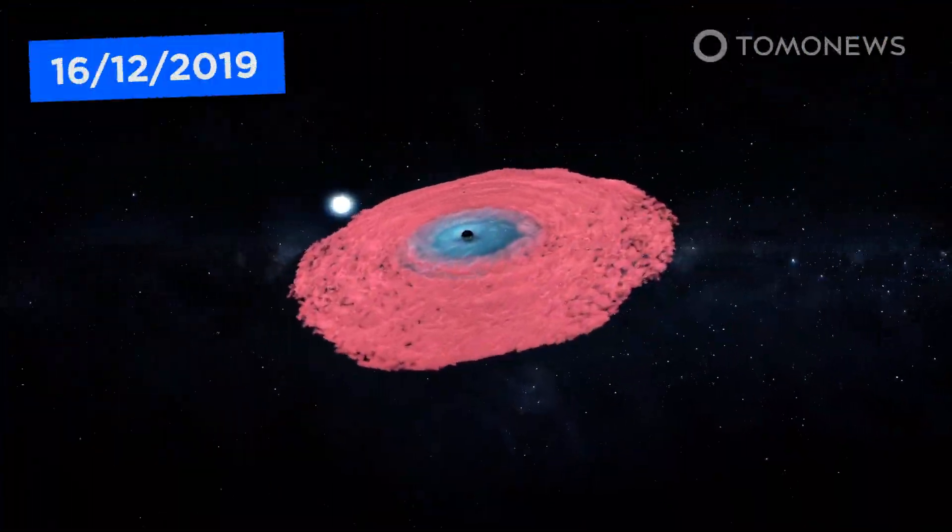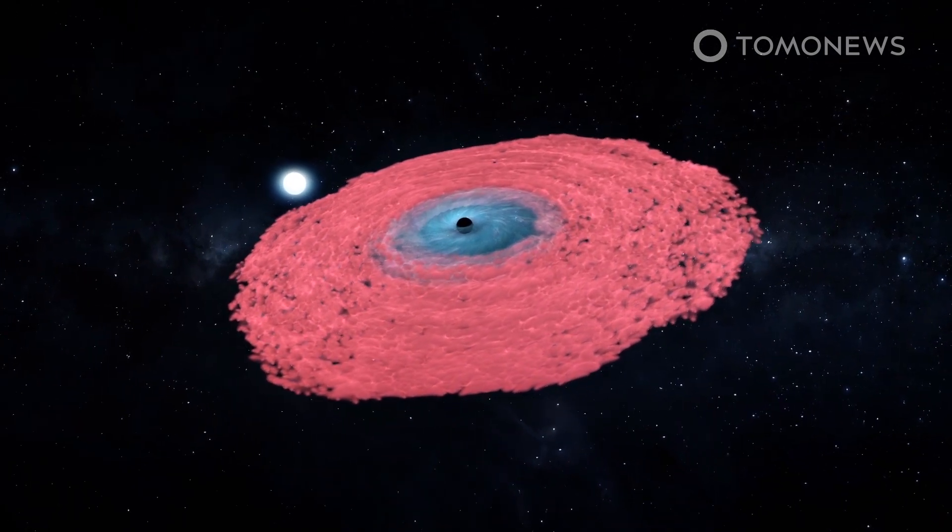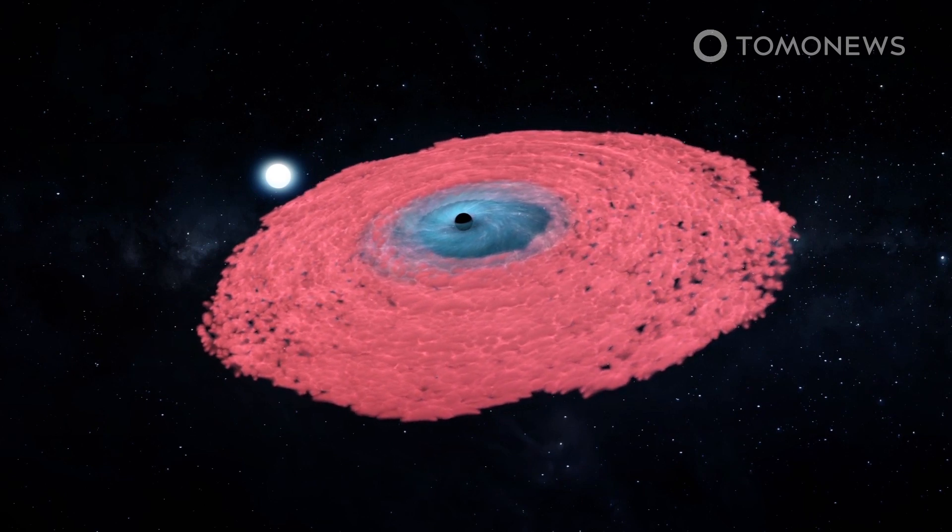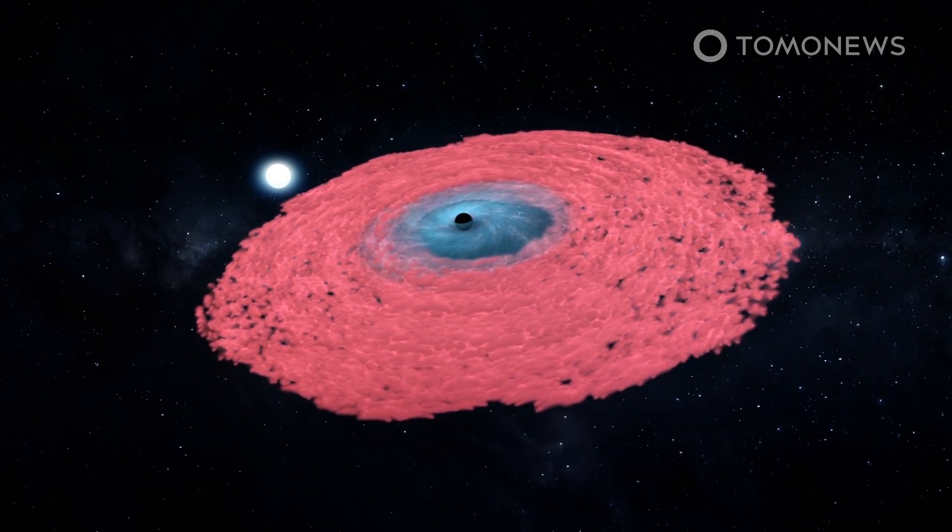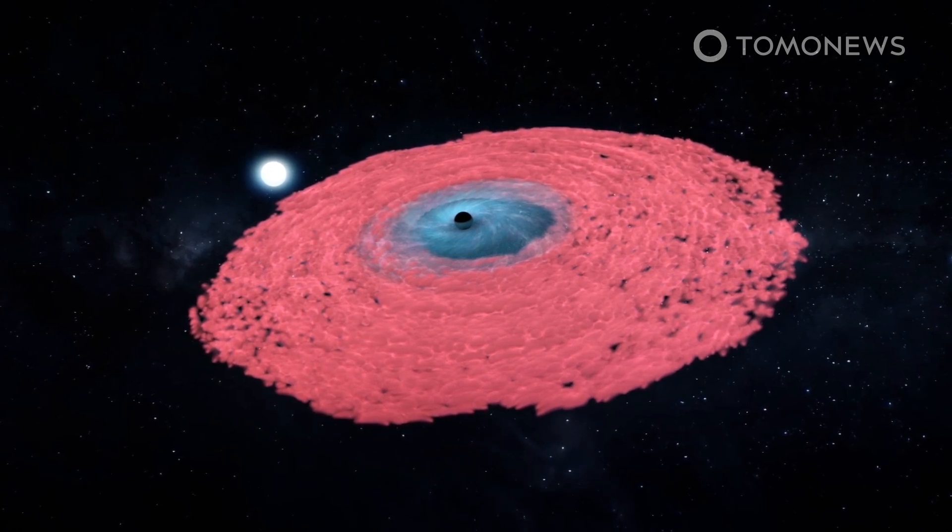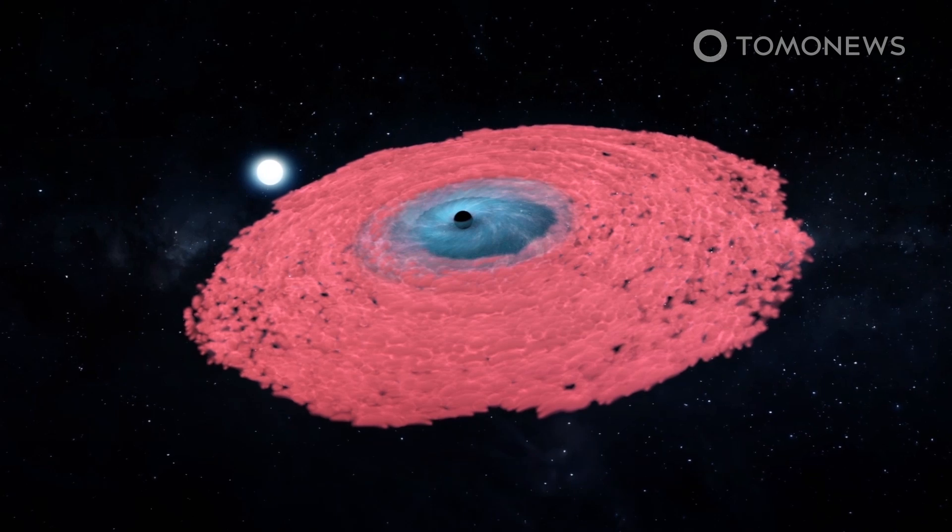Live Science reports that two independently published studies have called into question the size of the impossibly big black hole named LB1. A team led by Chinese astronomer Liu Jingfeng claimed that LB1 is 70 times the mass of the Sun, bigger than the 20 solar mass models predicted for black holes in our galaxy.